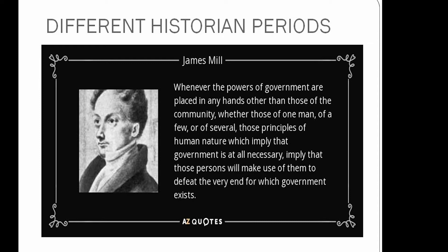Mill held the view that only British rule could civilize India and ensure the enlightenment and happiness of Indians. To bring about these changes, he suggested the introduction of European ways of conduct, arts, institutions, and law in India. Many believed that the period before British rule was full of darkness and India began to progress only after the arrival of the British. Ideas such as these cannot be accepted today. Any period of history cannot be referred to as 'Hindu' or 'Muslim' due to the variety of faiths during those periods. The religion of the rulers cannot determine the classification of various periods of history.